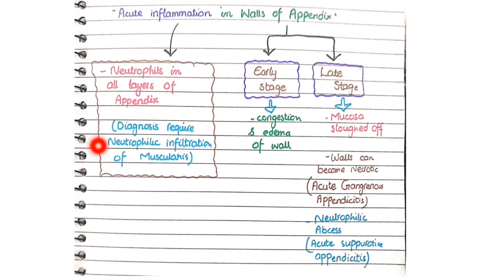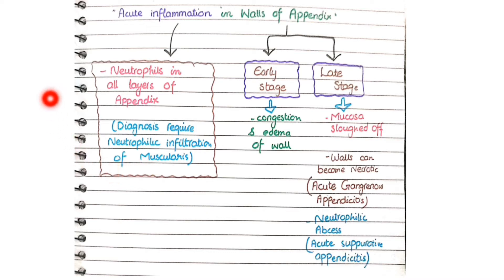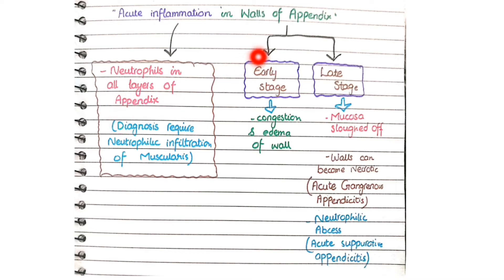An important point is that the diagnosis of acute appendicitis requires neutrophilic infiltration of the muscularis. This implies that the neutrophils should not be present just superficially — they should at least be present in the muscularis layer too. So acute inflammation means neutrophils in all layers of appendix.